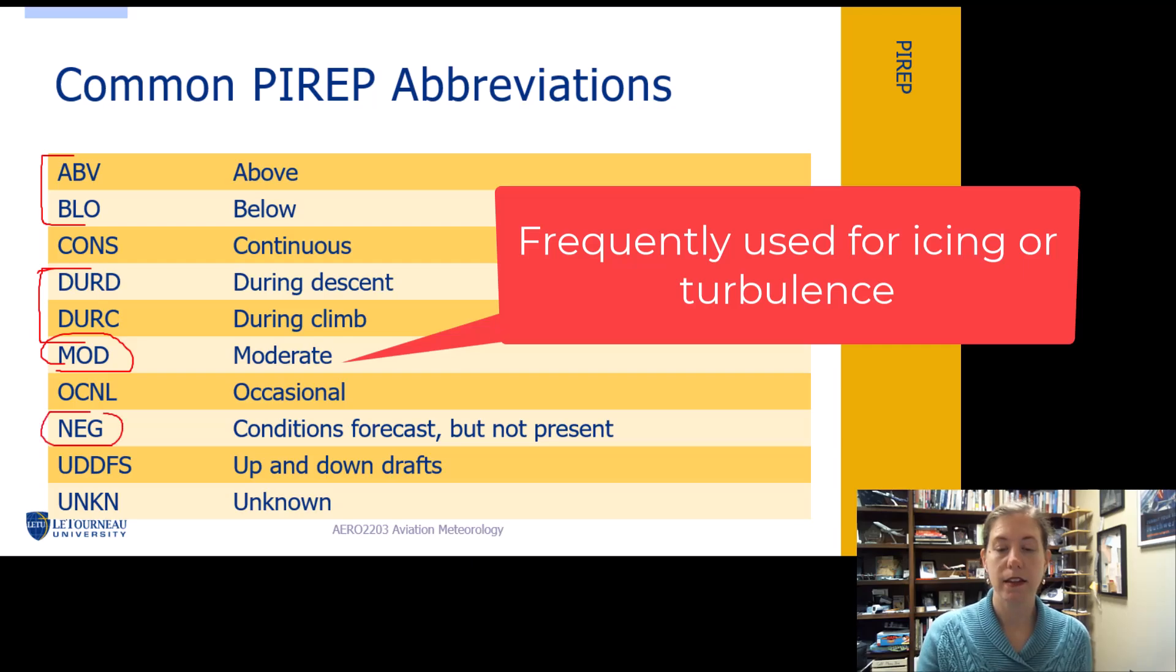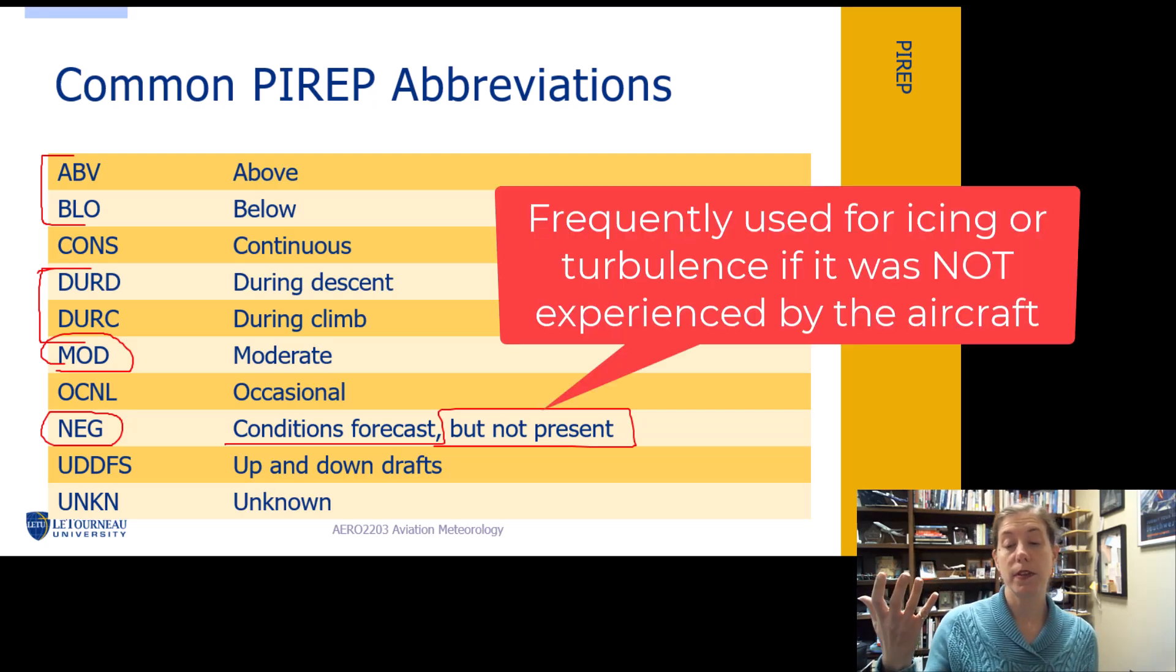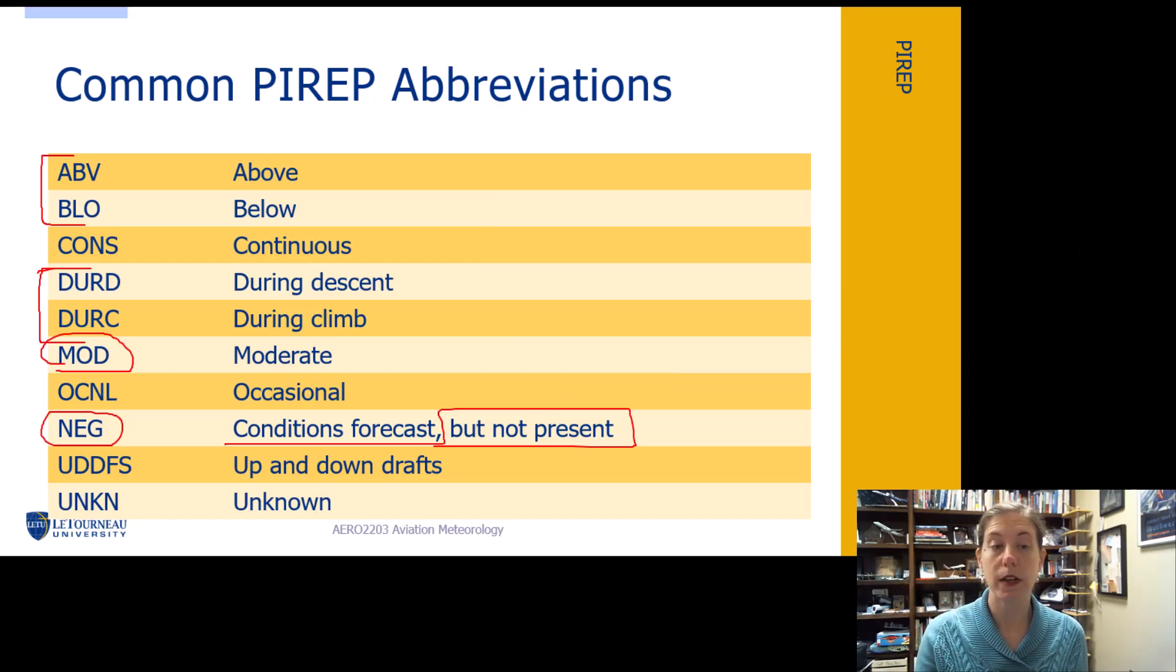Neg, let's look at this one in some detail. This means conditions were forecast, but they did not happen. It could be like icing was forecasted, but it wasn't actually encountered at all. So negative is often what we see on icing. We could also see it on turbulence. Turbulence was forecast, but we got a smooth day.